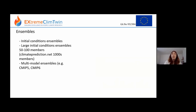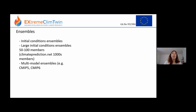There are initial condition ensembles — single models with different variability. Then you have large initial condition ensembles with say 50 to 100 members. An extreme example is climateprediction.net, where you can volunteer your computer to run climate models and feed results back to a centralised location. By having lots of volunteers you can run thousands of ensemble members.